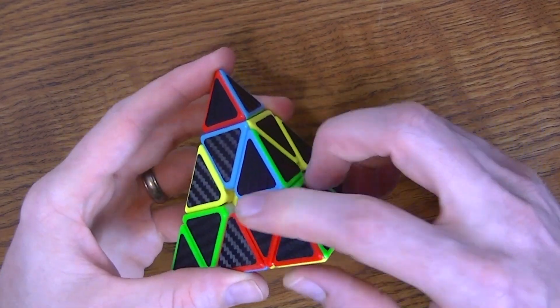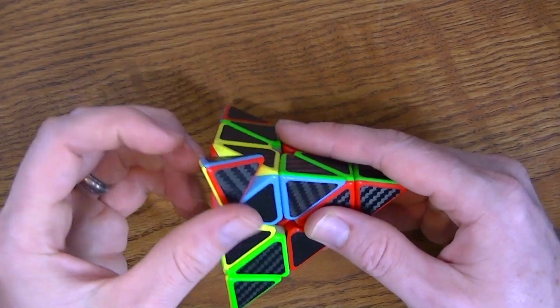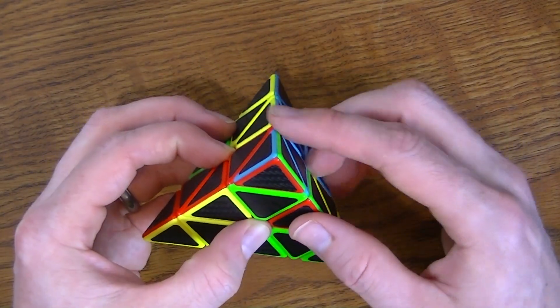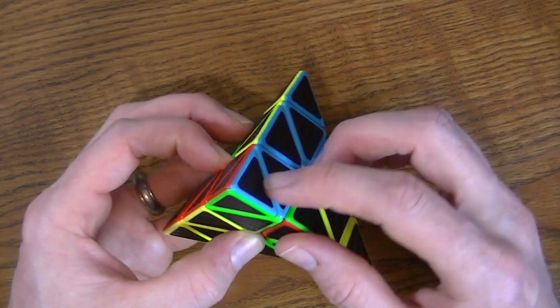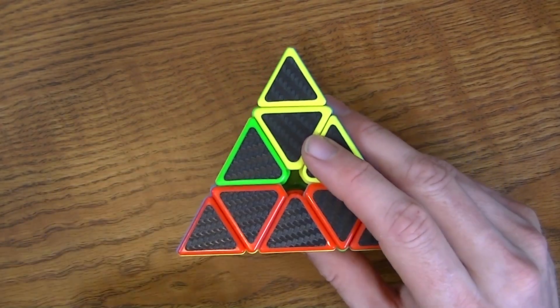So you see here I've got red, green, yellow. This one here I'm going to turn, whoops, wrong way. So I have blue, yellow, and red, and this one I will turn so I have red, blue, and green. Now I've got those pieces in place.